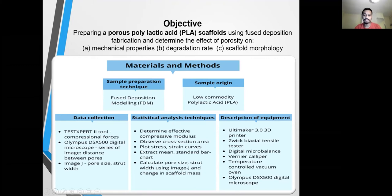The materials and methods are as follows. We are using a simple preparation technique which is fused deposition modeling, while we are collecting a sample as a low-commodity polylactic acid. The statistical analysis techniques include: determining effective compressive modulus, observing cross-sectional area, plotting stress and strain curves, extracting mean and standard bar charts, and calculating pore size and struts using ImageJ and change in scaffold mass.